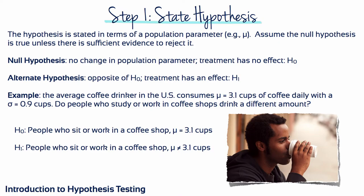Step 1: the hypothesis is stated in terms of a population parameter, and we assume the null hypothesis is true unless there is sufficient evidence to reject it. For example, the average coffee drinker in the US consumes a mean of 3.1 cups of coffee daily, with a standard deviation of 0.9. But what about people who study or work in coffee shops? Do they drink different amounts?